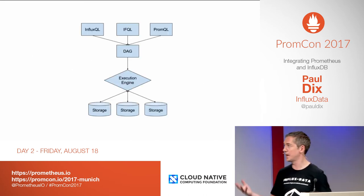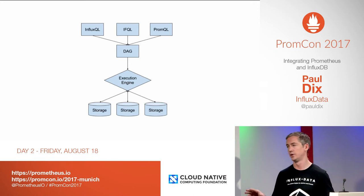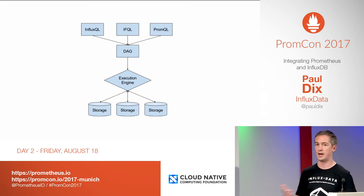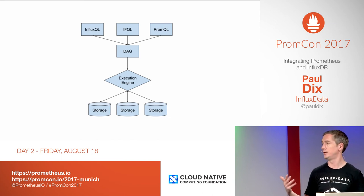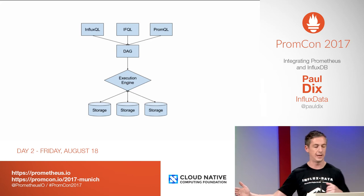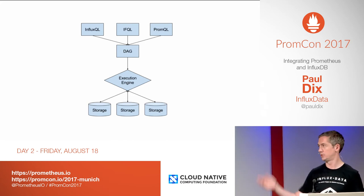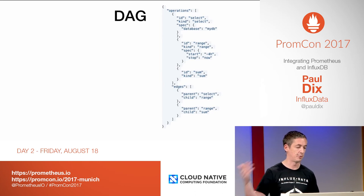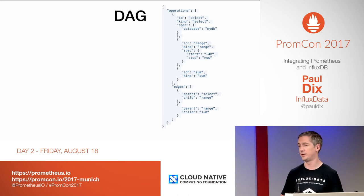We actually have prototype code that we're putting out in September showing basic Prometheus queries working alongside IFQL queries - that's what we're tentatively calling the new language. The idea is you have the query language at the top - InfluxQL, IFQL, PromQL, or TixScript. That gets parsed into a directed acyclic graph (DAG) describing what the query is. That gets passed to the execution engine, which develops a plan to execute that graph across n storage nodes. The DAG can be represented as JSON - we have operations like select, range, and sum, with edges connecting them. It's not always a strict list - it can be a tree.